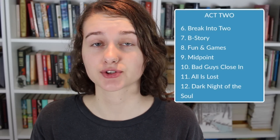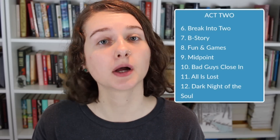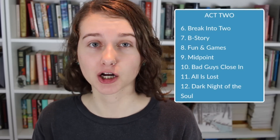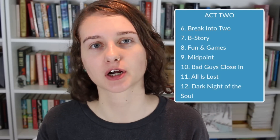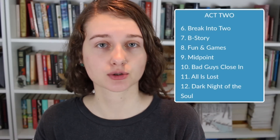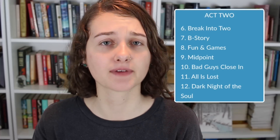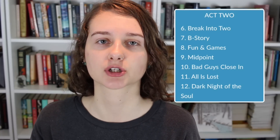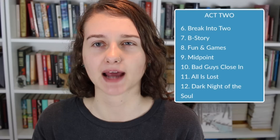The second act has seven beats. The first one is break into two, which is where the main character after the debate decides that they are going to embark on this journey. Then we have the B story, which basically comes from the film term where you would have the A story, the B story, the C story, etc. — this is often how TV shows are broken down. B story is basically a subplot. At the beginning of act two we're usually introduced to another character who is going to function as a subplot, oftentimes a love interest or another character who's going to have an important relationship with the main character.